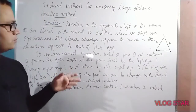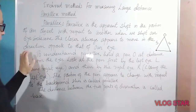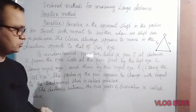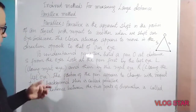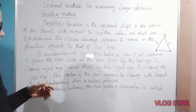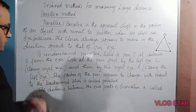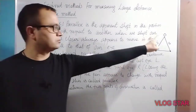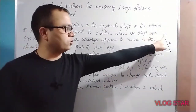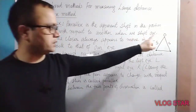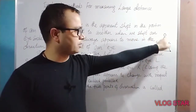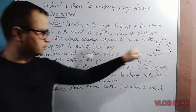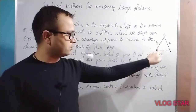The closer object always appears to move in the direction opposite to that of our eye. To understand parallax, we will consider this situation: hold a pen at point O, the position of the pen, at a distance S from the eyes.